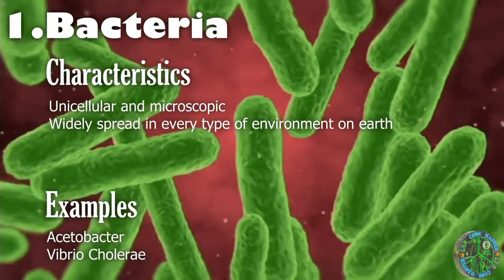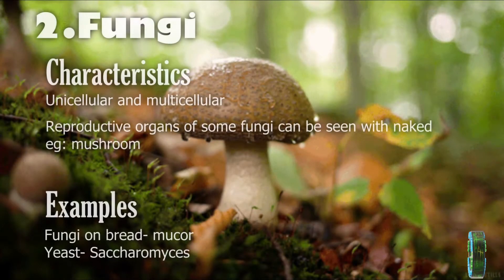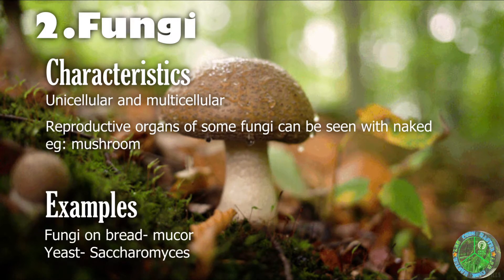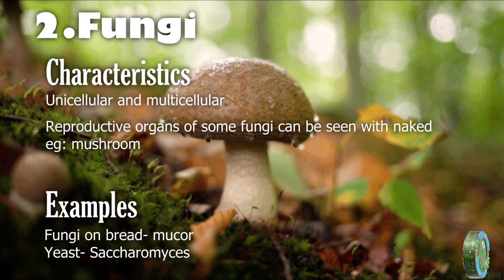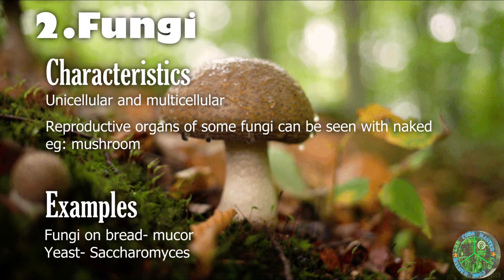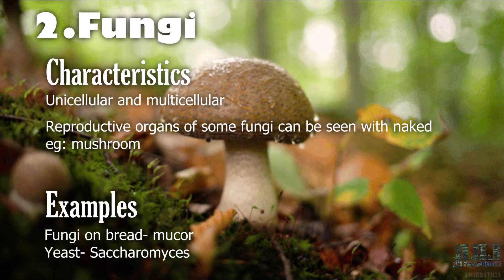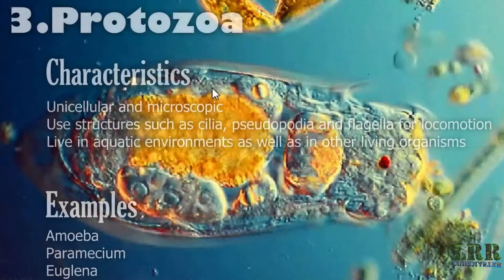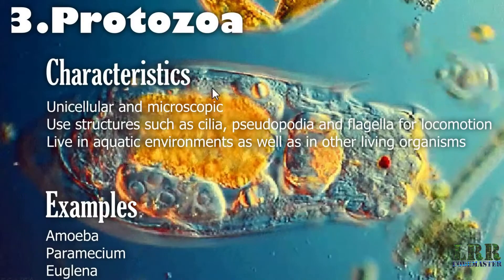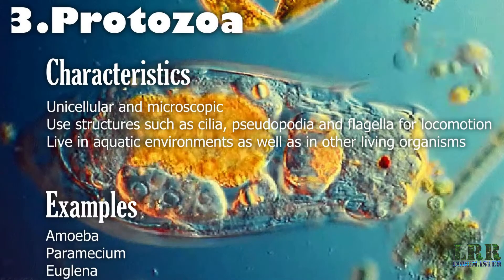Examples for bacteria are Acetobacter and Vibrio cholerae. Number two: fungi. Characteristics of fungi are unicellular or multicellular. The reproductive organs of some fungi can be seen with the naked eye — for example, mushrooms. Examples for fungi are Mucor and Saccharomyces.